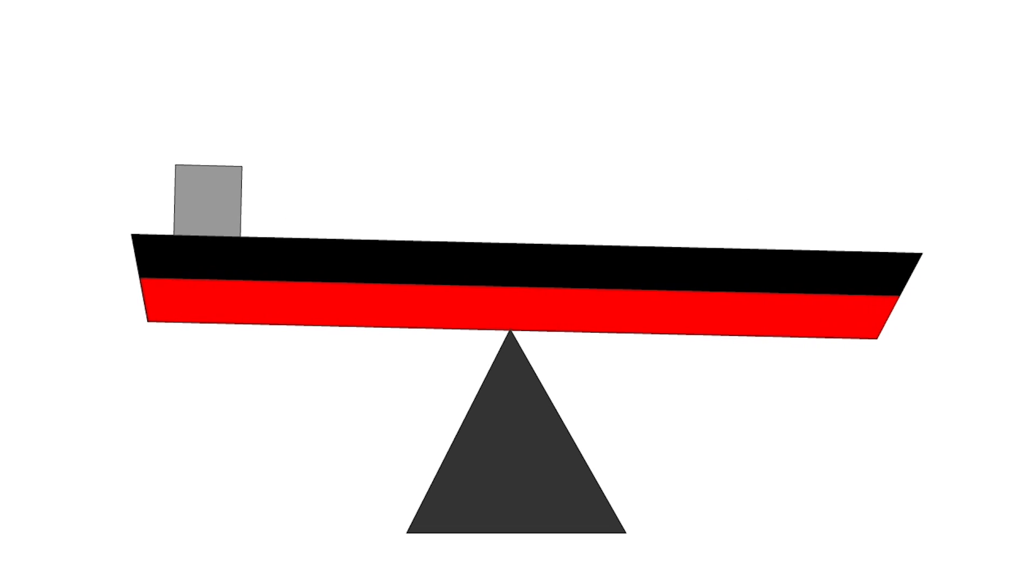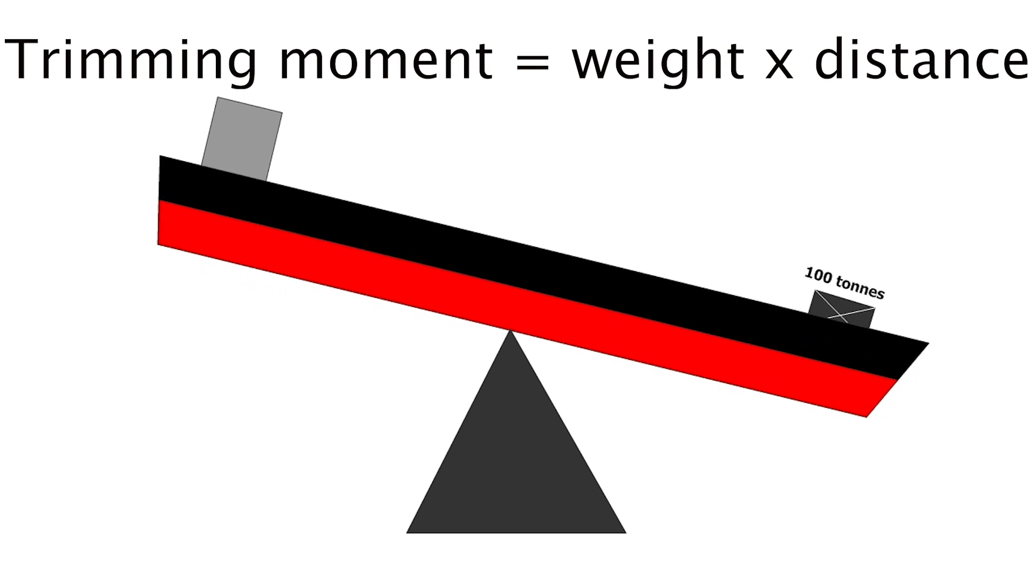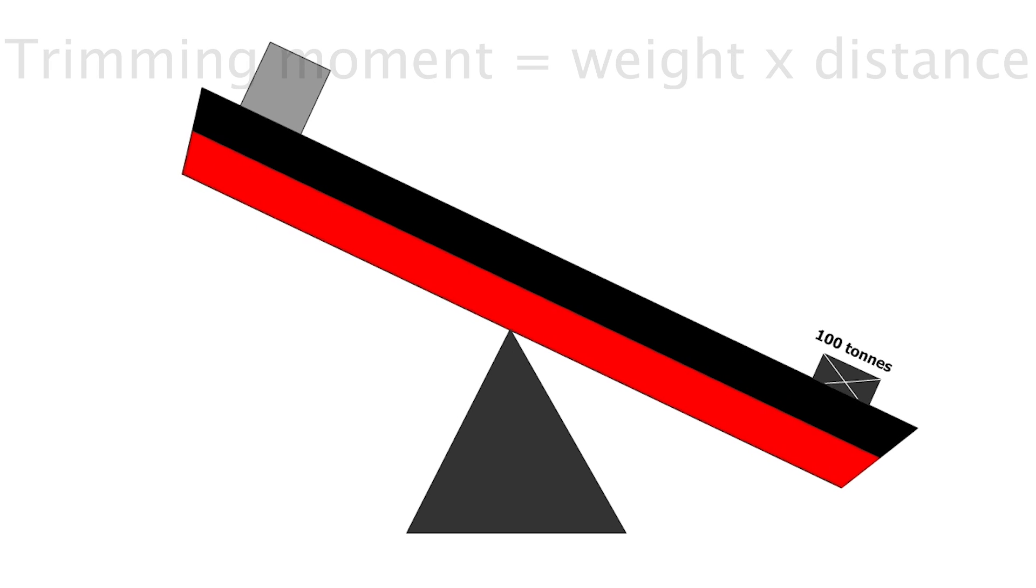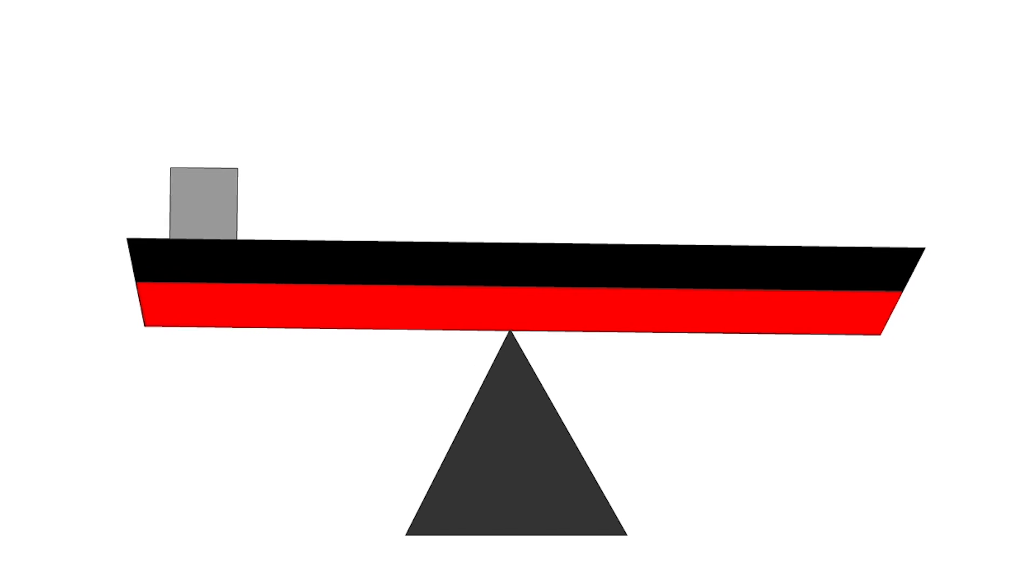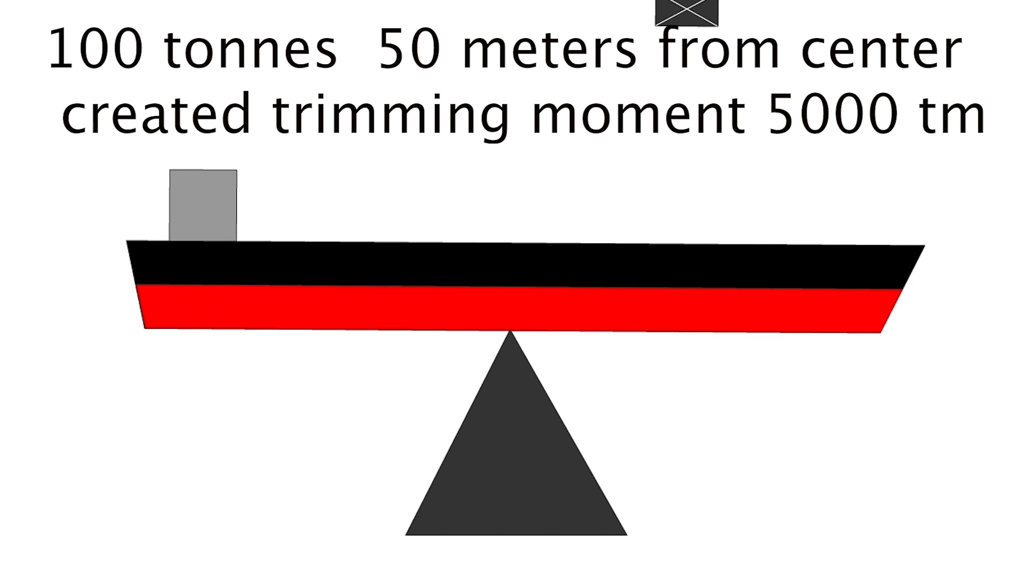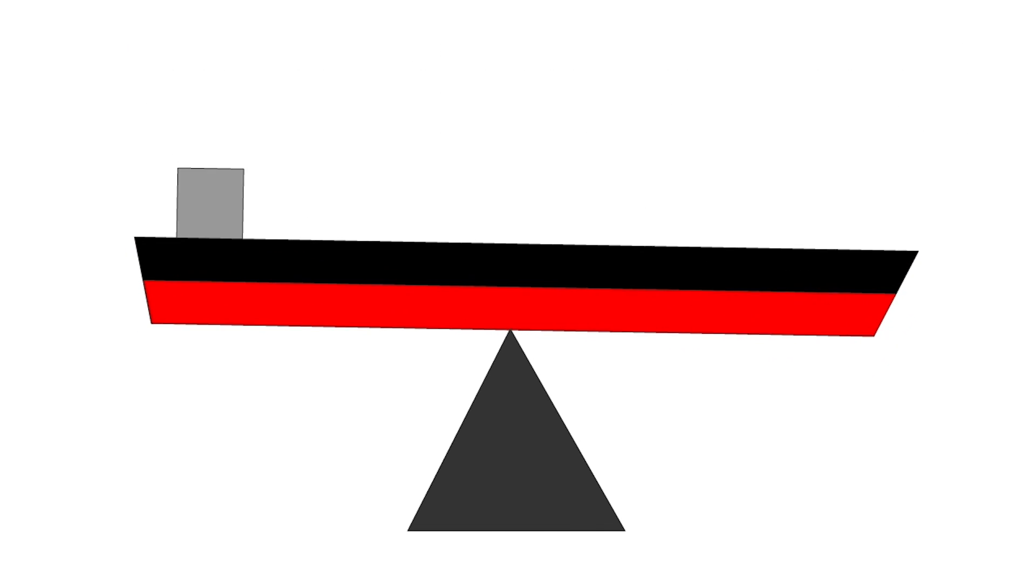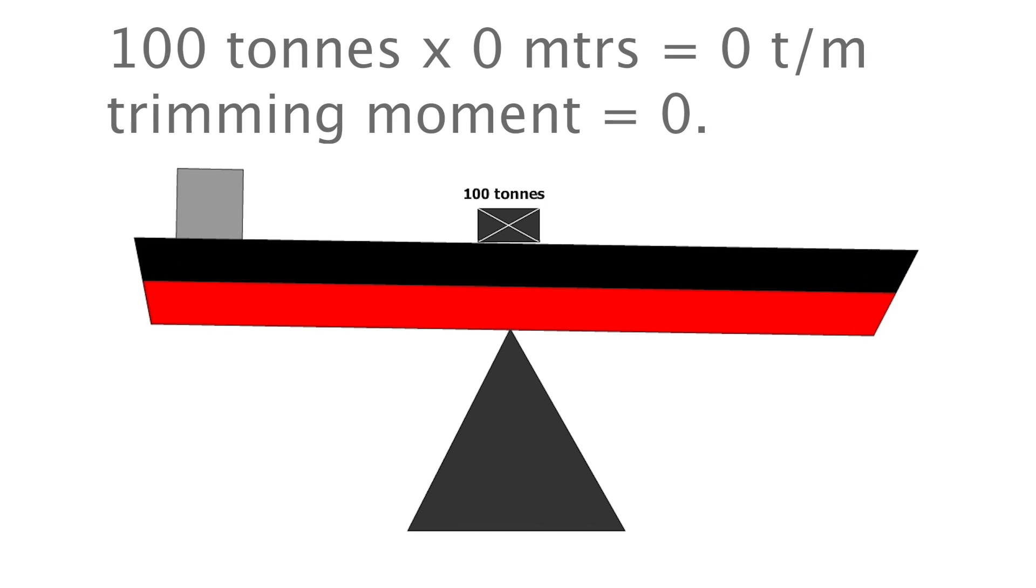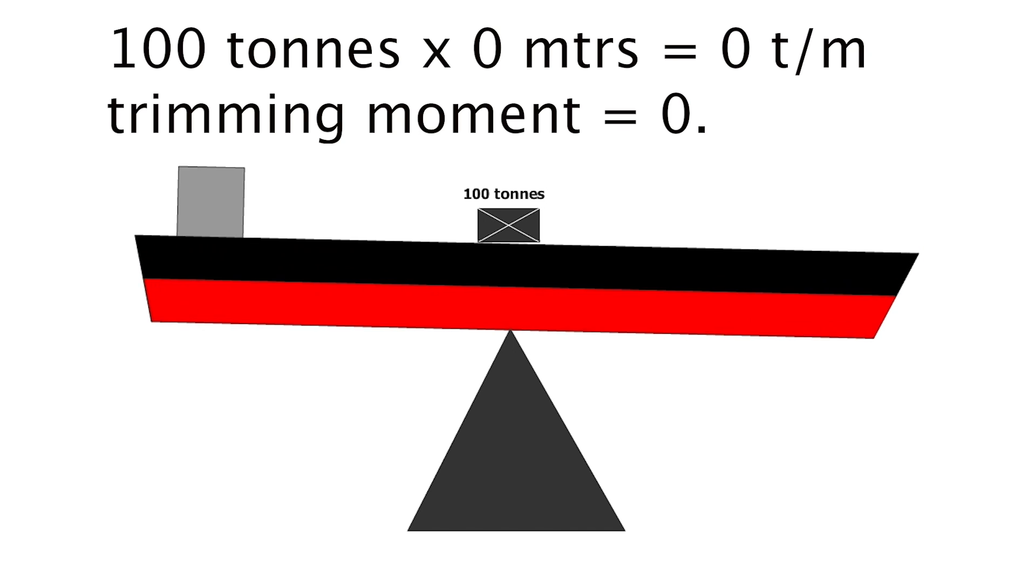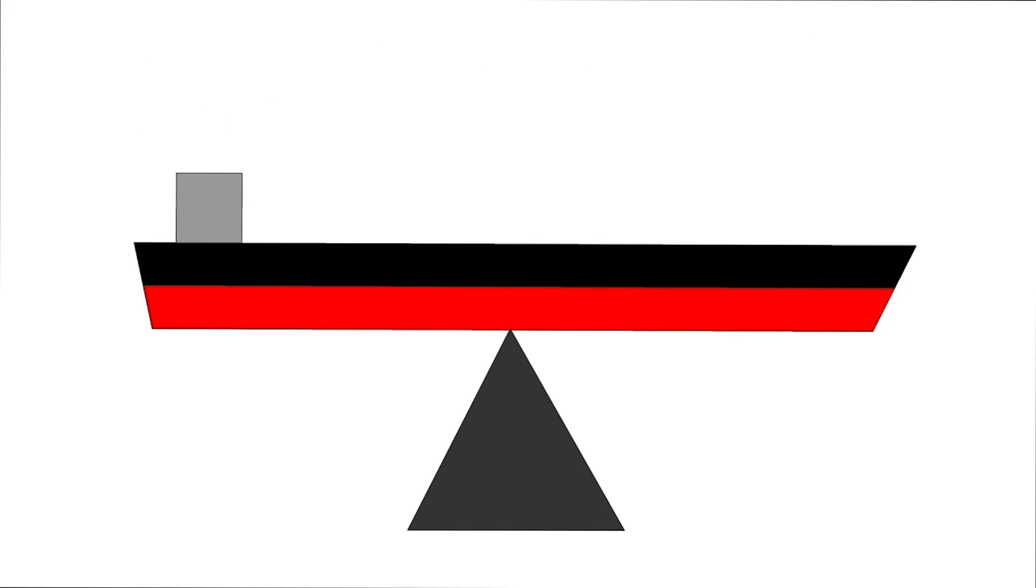If we don't have cargo on board, our ship is balanced. But if we place some cargo on the ship, its trim will change because cargo will create trimming moments. 100 tons loaded 50 meters far away from the center will create a trimming moment of 5,000 ton-meters. 100 tons loaded in the middle of the ship will make us multiply 100 tons by 0 meters, creating 0 trimming moment, and the ship's trim doesn't change.